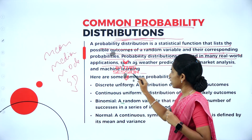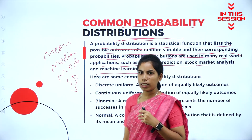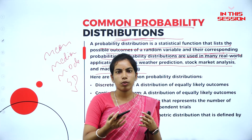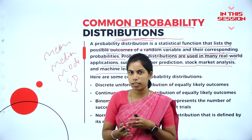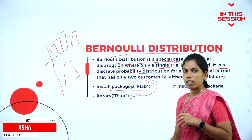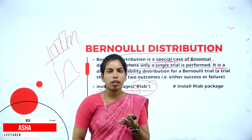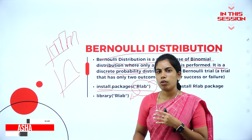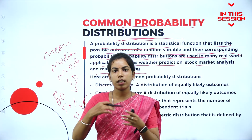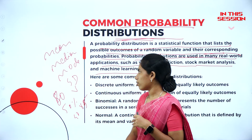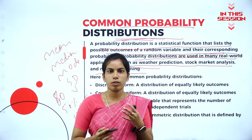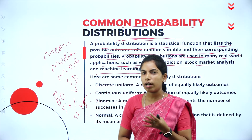Probability distributions are used in many real-world applications such as weather prediction, stock market analysis, and also machine learning. Machine learning is nothing but making a machine learn by human intelligence, using a library called RLAB. First we have to install that package, then only we can load that package. We can use statistics distribution, that is a common probability distribution, to predict the result for variables.